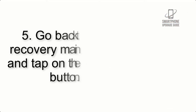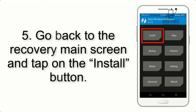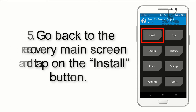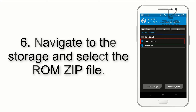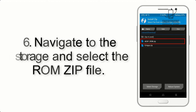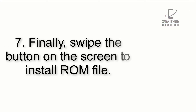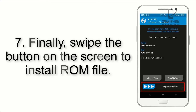Step 5: Go back to the recovery main screen and tap on the Install button. Step 6: Navigate to the storage and select the ROM zip file. Step 7: Finally, swipe the button on the screen to install the ROM file.